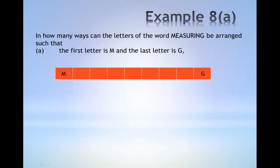First of all, we place M and G in the first and the last position as shown. Next, we consider the remaining letters. Notice that every letter only appears once. So some of the possible permutations are as shown.